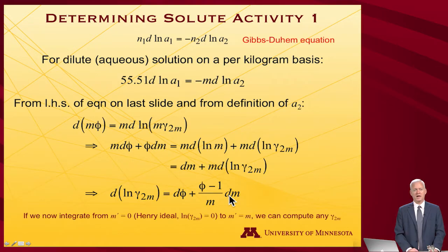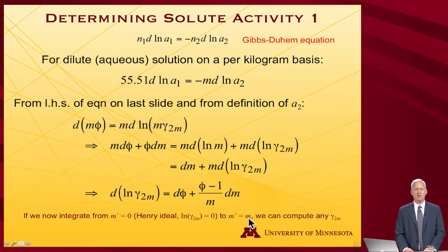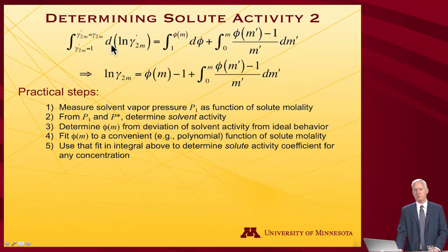That's an equation I can integrate. If I integrate from zero molality — where we have a Henry's law ideal case and the activity coefficient is 1, so log γ = 0 — up to some actual physical molality m, I can compute the values of the activity coefficient. When I evaluate the integral of d log γ, I get log γ at the endpoint minus log at zero, but log(1) = 0, so I just get the log of the activity coefficient. Integrating dφ gives φ − 1, and integrating the remaining term runs from 0 to m.